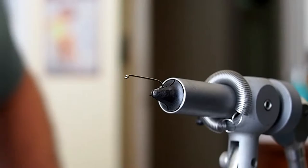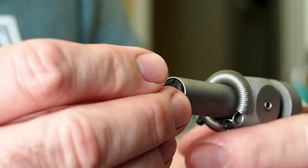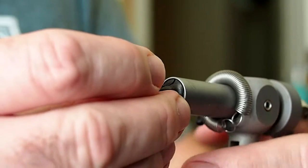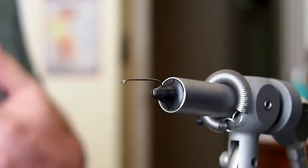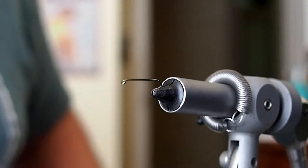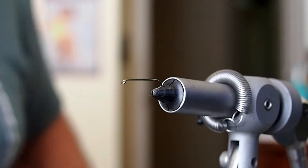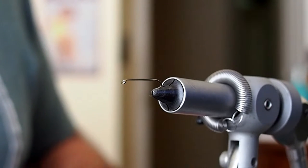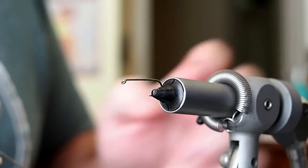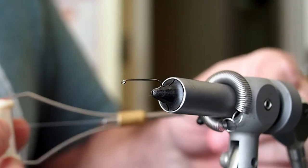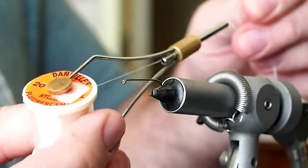It calls for a size 10, 3X, 4X, or 6X long hook. I've got a size 10, 3X long in the vise right now. It is a TMC 5263. I'm going to be tying this fly with some Danville's Nylon in Fluorescent White.